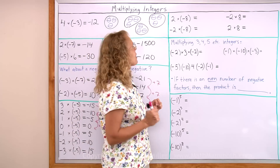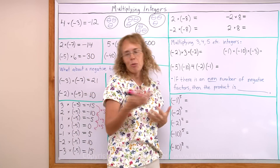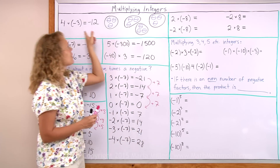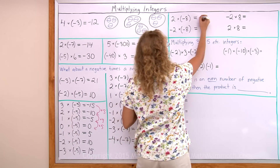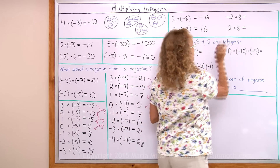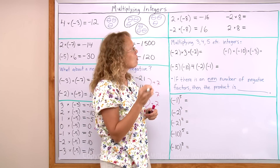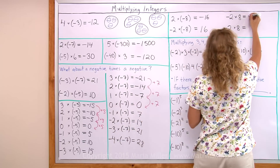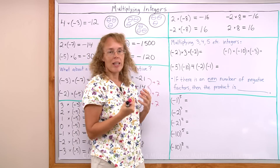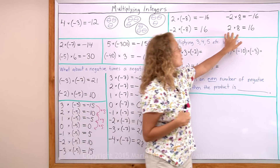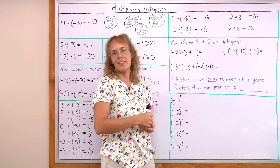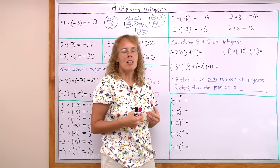Let's practice just a little bit. Here's 2 times negative 8, negative 2 times negative 8, negative 2 times 8, and 2 times 8 — all the possible combinations. 2 times negative 8 is a positive times a negative, so my answer will be negative 16. Negative 2 times negative 8 is negative times negative, so I get the positive answer, 16. Negative 2 times 8 is negative times positive — like 8 groups of negative 2 — the answer is negative 16. And 2 times 8 is 16. So notice there are 2 ways to get a positive answer: both numbers positive, or both numbers negative. If one is negative and one is positive, you get a negative answer — that's a good rule of thumb to keep in mind.